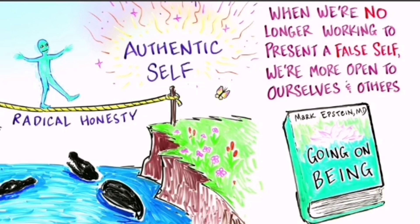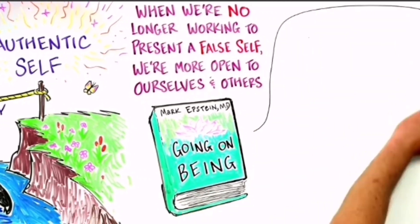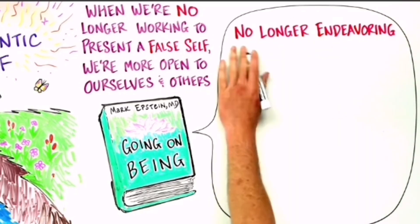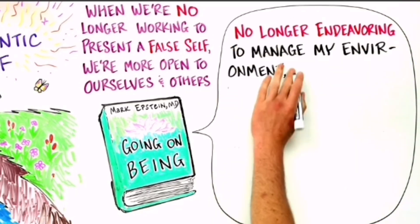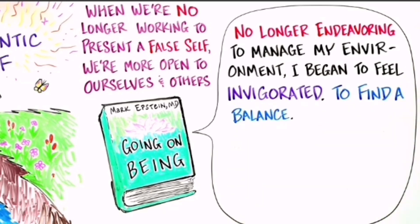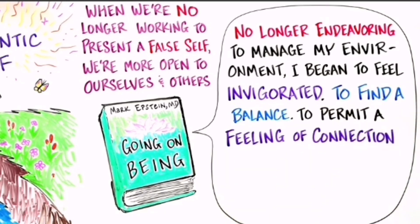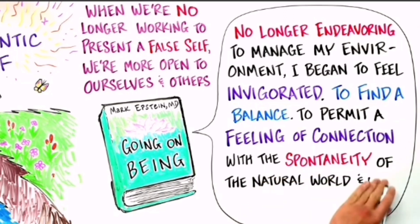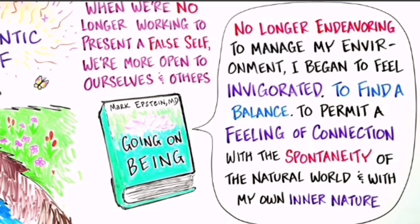When we're no longer working to present a false self, we're more open to ourselves and others. As the psychiatrist Mark Epstein wrote in his book, Going On Being, about his own journey toward authenticity: no longer endeavoring to manage my environment, I began to feel invigorated, to find a balance, to permit a feeling of connection with the spontaneity of the natural world and with my own inner nature.